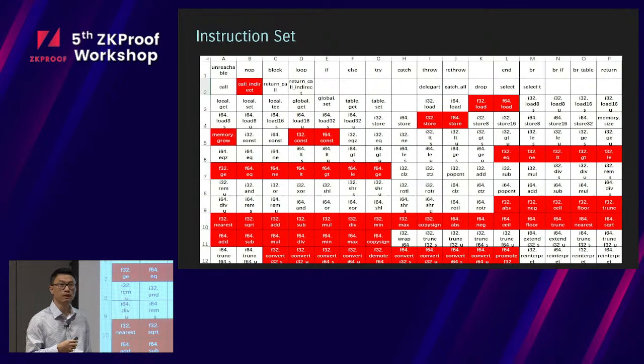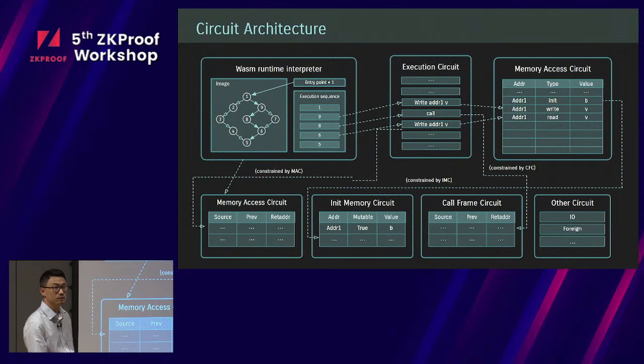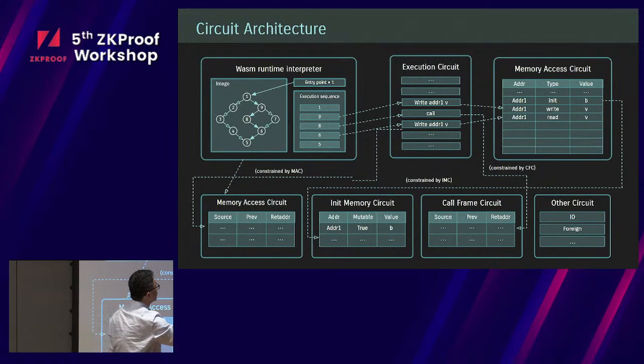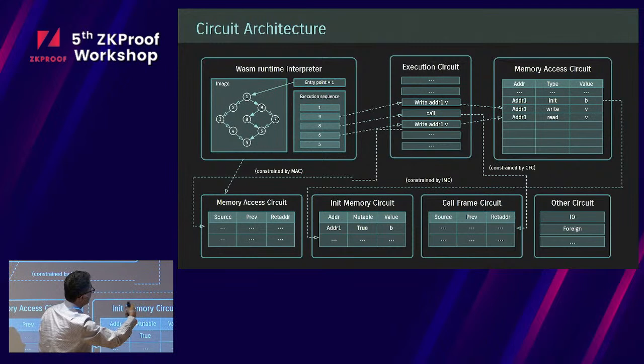This is the circuit architecture. It's pretty straightforward. You have a WebAssembly image. When you run values to the prover, it notices there's an execution sequence. When we put the execution sequence into the execution circuit, we enforce all the reads somehow get a valid result every time you read and it's initialized validly.